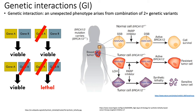One of the most common kinds of genetic interactions is called synthetic lethality. In a normal functioning cell with both genes functional, the cell is fine and viable. If you knock out either gene individually, the cell is still viable. But if you knock out both genes, that would be a lethal mutation leading to cell death. That's an example of synthetic lethality.